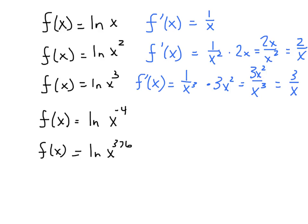Let's try this with x to the negative 4. f prime of x is going to be 1 over x to the negative 4 times the derivative of x to the negative 4, which is negative 4x to the negative 5. That equals negative 4x to the negative 5 over x to the negative 4. Negative 5 minus the negative 4 is negative 1, so that still ends up on bottom, so we get negative 4 over x.